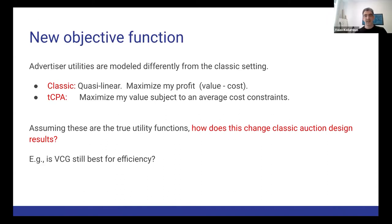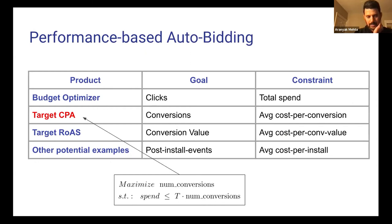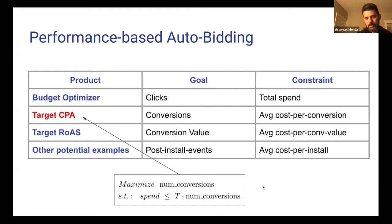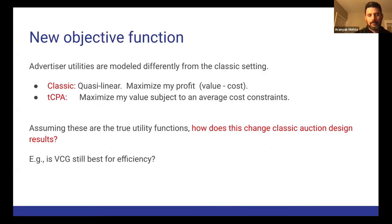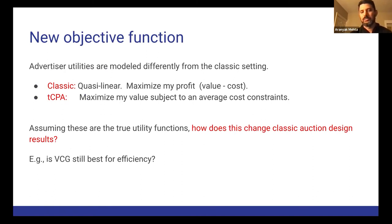The performance-based auto-bidding product we are interested in is target CPA, where the goal is to maximize conversions subject to an average cost per conversion constraint. So the bidding LP looks like: maximize number of conversions subject to the spend being at most the target times the number of conversions. In the classic quasi-linear setting, the goal is to maximize profit — value minus cost — while in target CPA, the goal is to maximize volume or value subject to an average cost constraint, that the average cost per conversion is at most t.